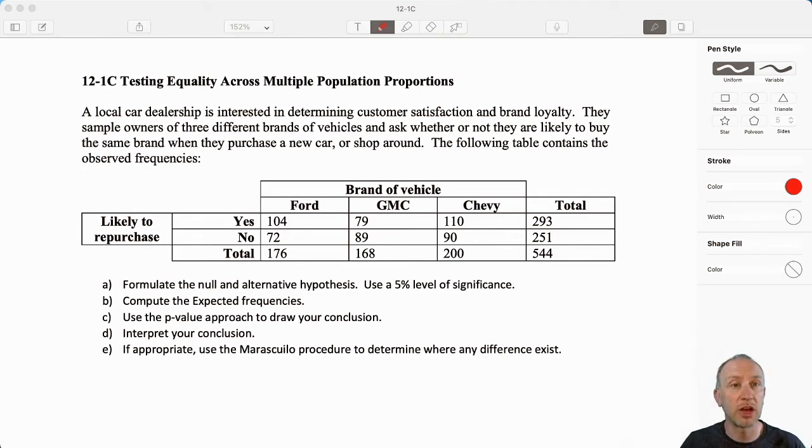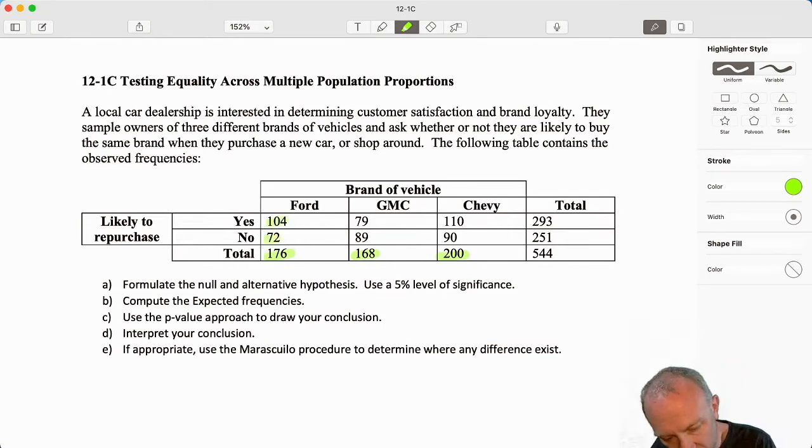They sample owners of three different brands of vehicles and ask whether or not they're likely to buy the same brand when they purchase a new car or shop around. So here we have our observed frequencies. Here are the total number of each type of brand owner that were surveyed and the number of yeses and nos.